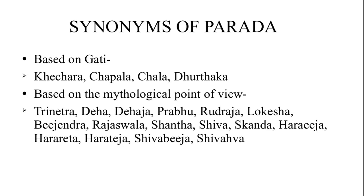According to Gati, mercury has an elusive property — elusive means slippery or difficult to capture. So it has synonyms like Khechara, Chapala, Chala, Bhurtaga, etc. Then based on the mythological point of view, everything is connected with Lord Shiva. The synonyms are Trinitra, Deha, Dehaja, Prabhu, Rudraja, Harabija, Hararetha, Harateja, etc. — all synonyms related to Lord Shiva.